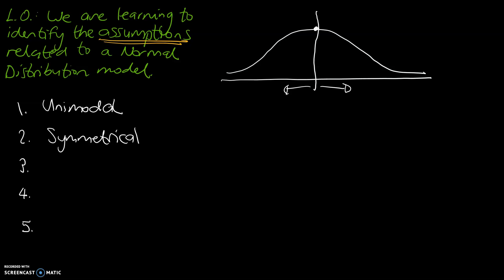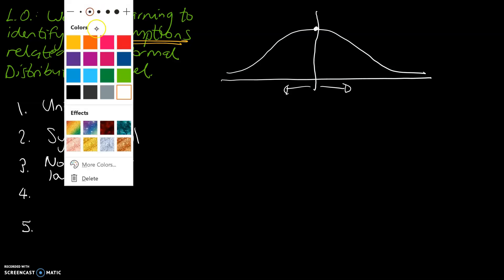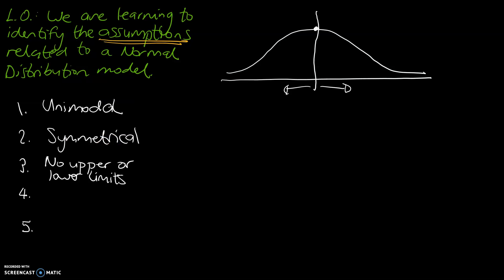The third one, this one's not as obvious from the graph, but there must be no upper or lower limits. And this relates to the graph itself, because a normal distribution curve model starts at its most likely point in the middle, and it becomes less and less likely. And in theory, this line actually goes on forever.